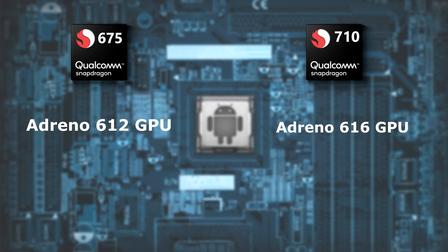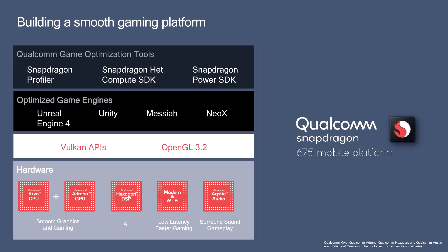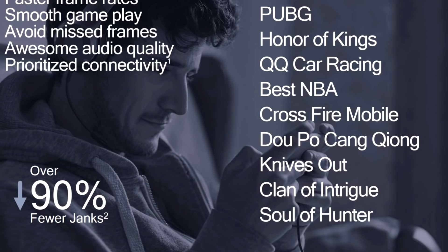The Snapdragon 675 has an edge and also features a GPU advantage. The Snapdragon 675 has an Adreno 612 GPU, and the 710 processor has an Adreno 616 GPU. For gaming, the Adreno 616 on the 710 is the better GPU. The 675 with Adreno 612 is still optimized for gaming. The Adreno 612 GPU is a great gaming chip overall.